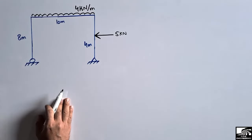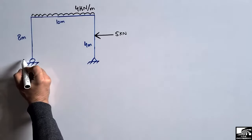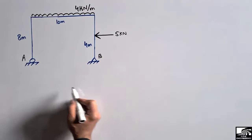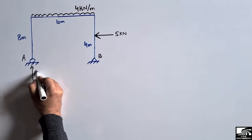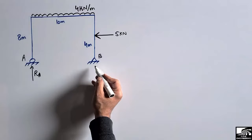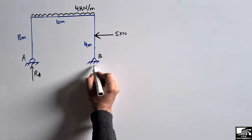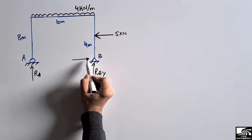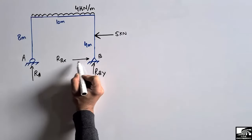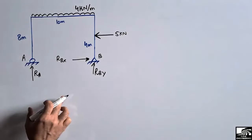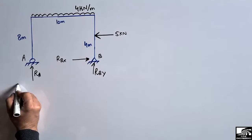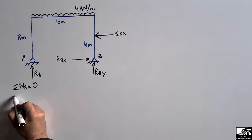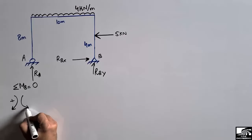To start, let's call the roller support point A and the hinge support point B. The roller support can take only the vertical load, represented by RA. The hinge support can resist both vertical and horizontal loads, represented by RBY and RBX. For the sign convention, clockwise moment is taken as positive and anti-clockwise moment is taken as negative.